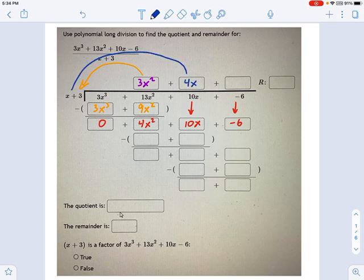Now we multiply this 4x times that polynomial again and bring it underneath. Let's see what we get. 4x times x is 4x squared. 4x times 3 is 12x.